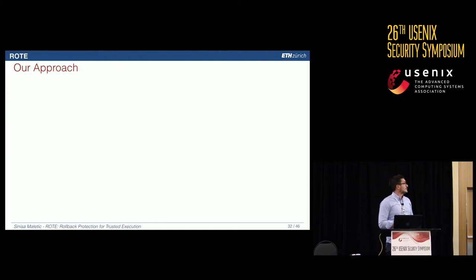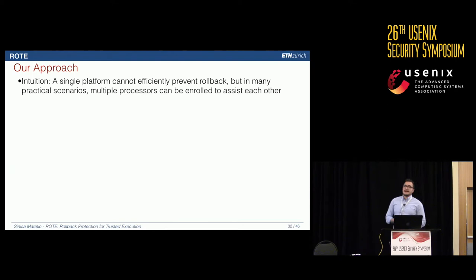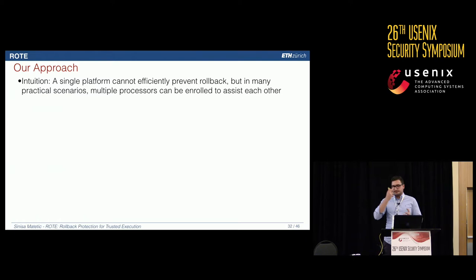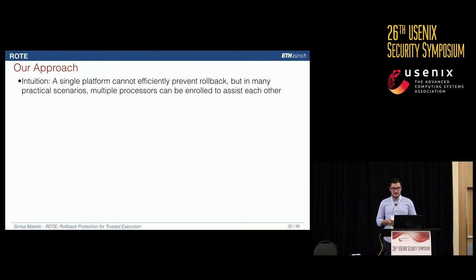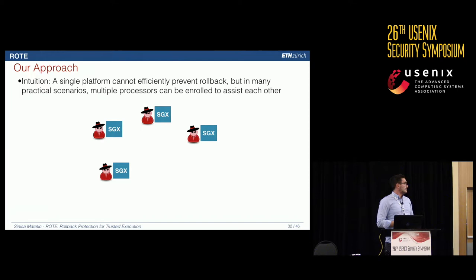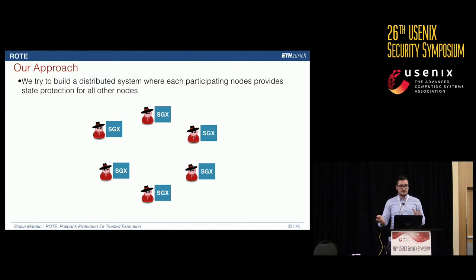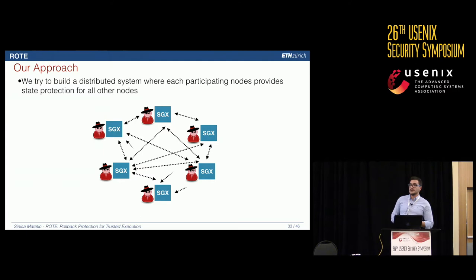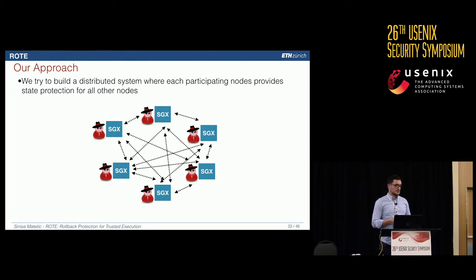The basic intuition behind our solution: a single platform cannot efficiently prevent rollback attacks with SGX alone, but in many practical scenarios multiple processors can help each other achieve this property. We build a distributed system where each participating node provides state protection for all other nodes. They communicate one-to-one and exchange monotonic counters to protect their state.